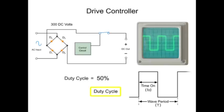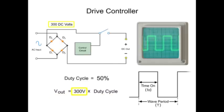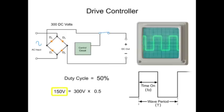Multiplying the duty cycle times the input voltage will give you the voltage output. In this example, a 300 volt input will be modulated by 50 percent, so the final voltage delivered to the load or motor is 150 volts.